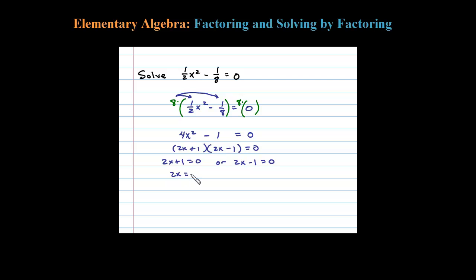So here 2x equals negative 1, x equals negative 1 half. 2x equals 1, x equals 1 half. So the two solutions here in set notation are going to be plus or minus 1 half.